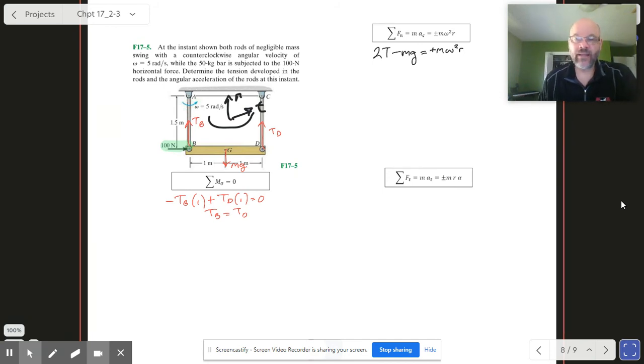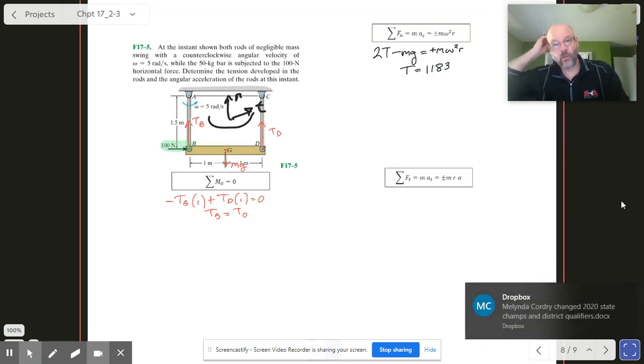Now if we plug in our value for mass and our value for omega which is 5, then the tension turns out to be 1183. You're going to want to work through that math on your own and make sure that seems reasonable to you.